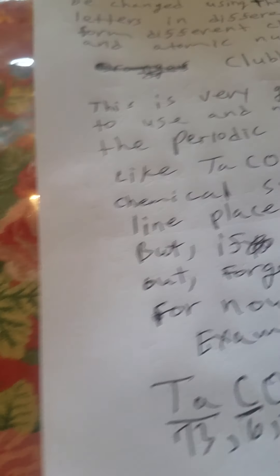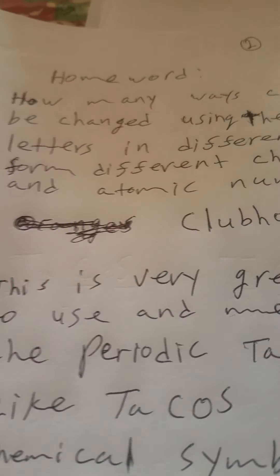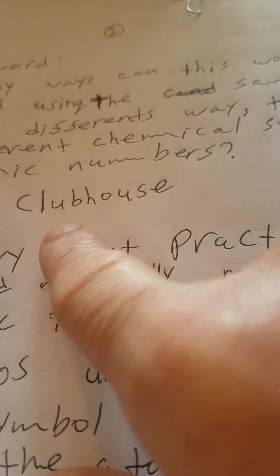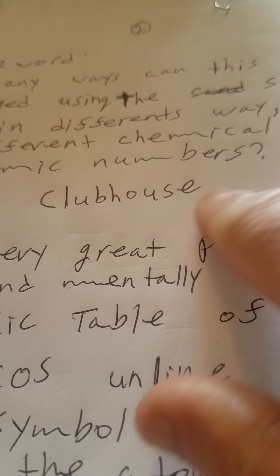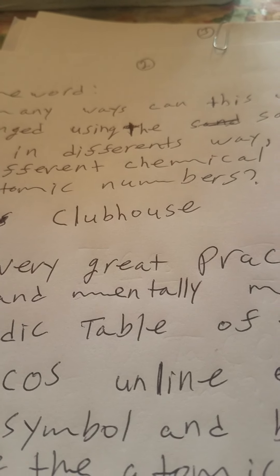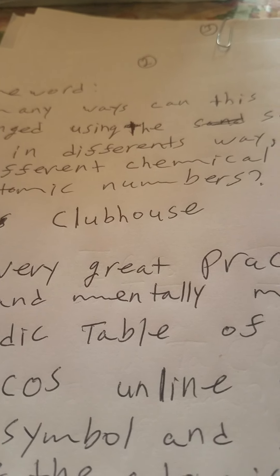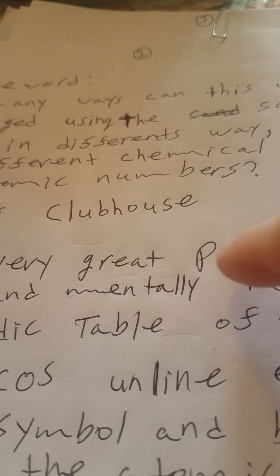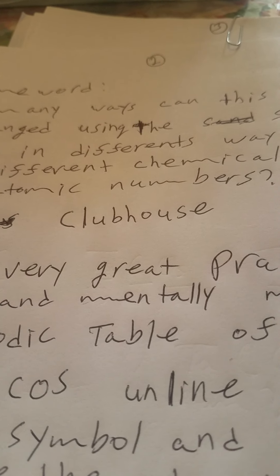Now I have a homework assignment for you. If you want to study this, do the same thing. Take the word 'clubhouse' — club, house — and rewrite it in as many ways as you can. See how many different chemical symbols and atomic numbers you can come up with for the same word written in different ways.